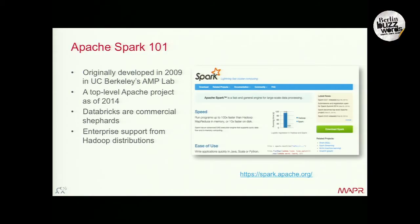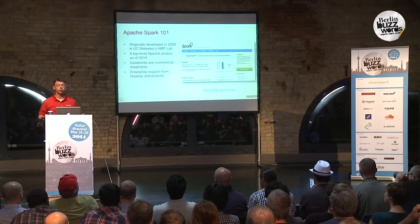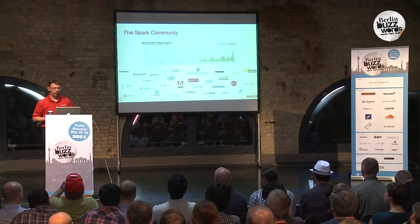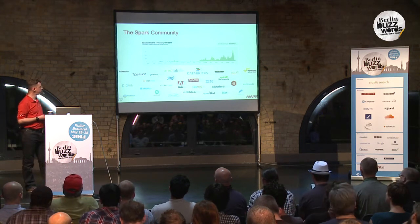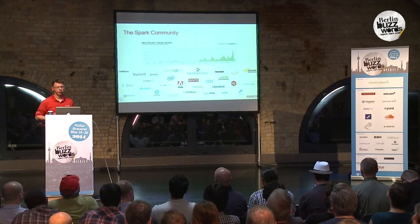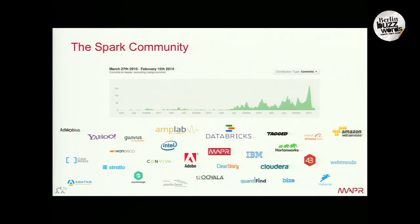A bit of background on Spark: it was initially developed by the AMPLab folks. Mesos is quite close to them as well. Earlier this year it got promoted to a top-level Apache project, and the commercial shepherds are Databricks. You can get enterprise support from Hadoop distributions. The Spark community has actually grown pretty rapidly, and there you see contributors, committers, users — people who generally do something with Spark.